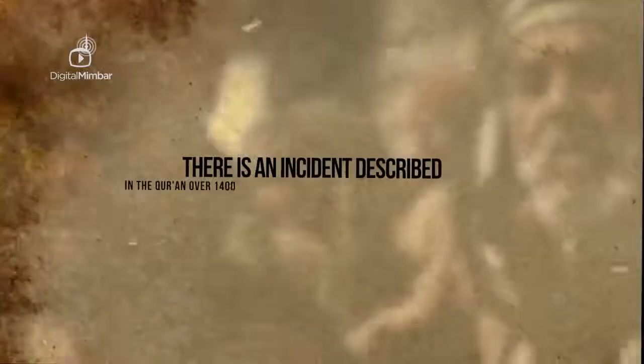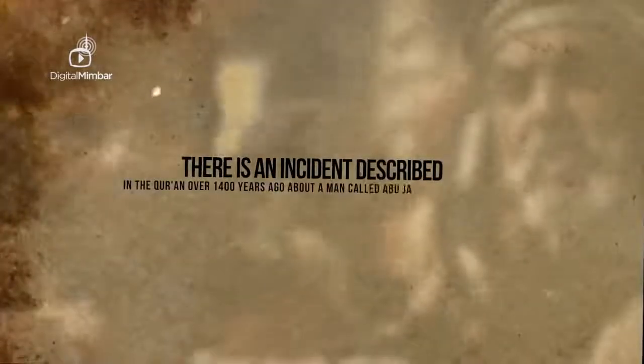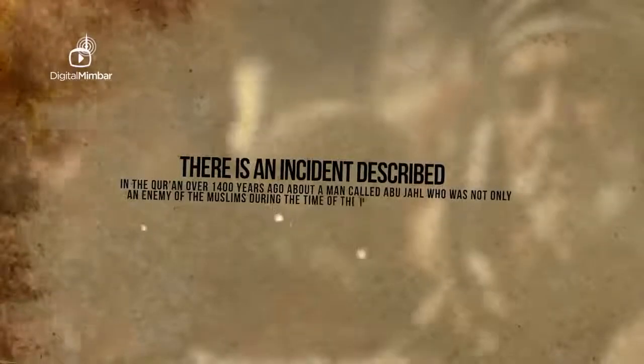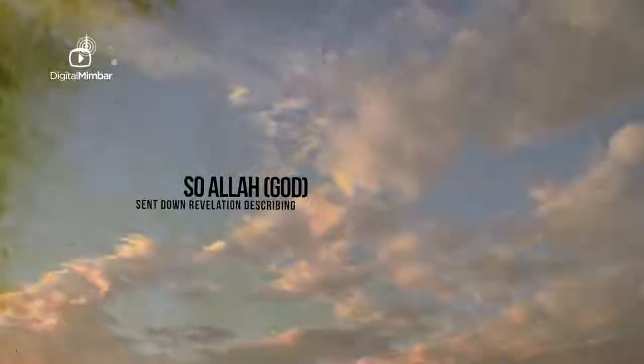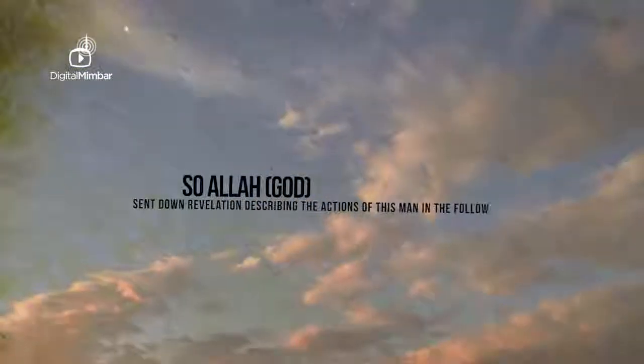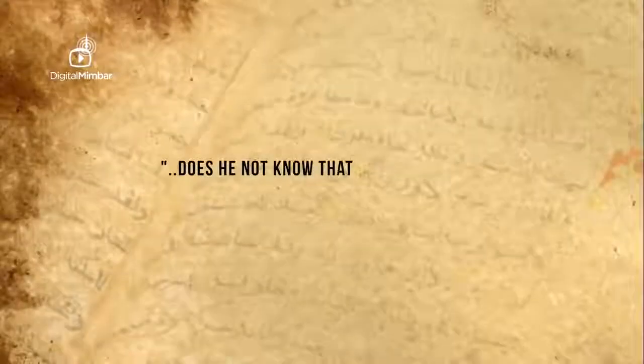There is an incident described in the Quran over 1400 years ago about a man called Abu Jahil, who was not only an enemy of the Muslims during the time of the Prophet Muhammad, peace be upon him, but also a well-known pathological liar, compulsive liar. So Allah, God, sent down the revelation describing the actions of this man.